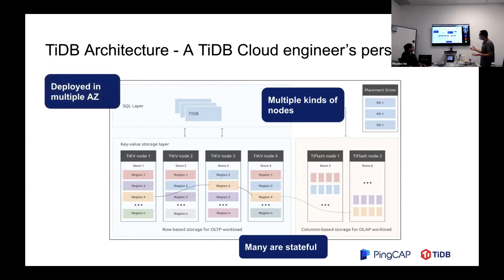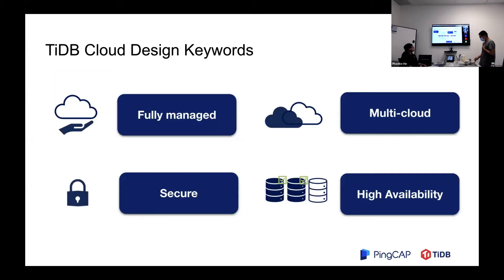We deploy across multiple availability zones because we are distributed and highly available. This is very complicated — if you have a bunch of machines, it will take some time to deploy it on your own. TiDB Cloud's design keywords are: fully managed, multi-cloud, secure, and high availability. How do we do it?